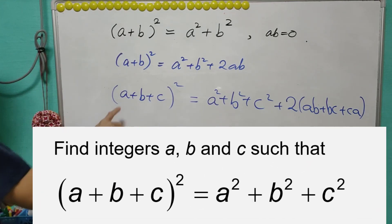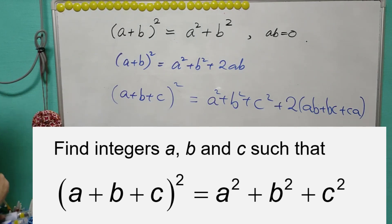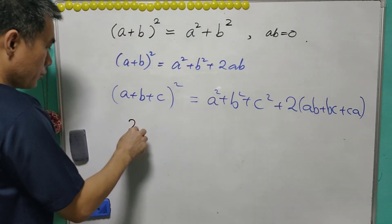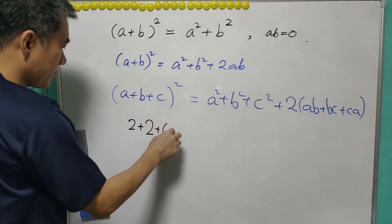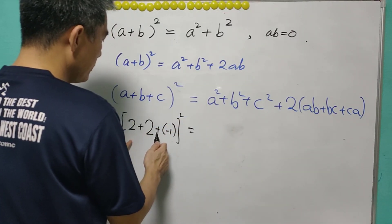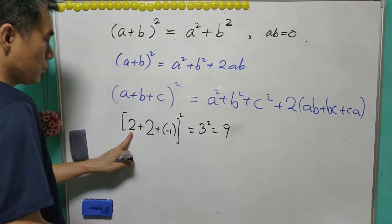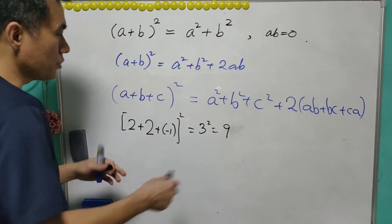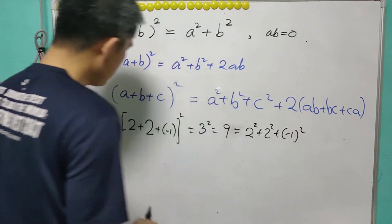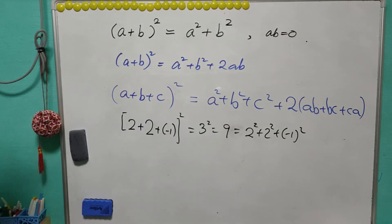So our task here is to find abc so that the sum of squares equals to the square of sum. So for example, we start with 2, 2, and negative 1. 2 plus 2 plus negative 1 is 3, 3 square is equal to 9. And 2 square plus 2 square plus negative 1 square is also equal to 9. So in this case, if abc equals to 2, 2, negative 1, the sum of squares equals to square of sum.